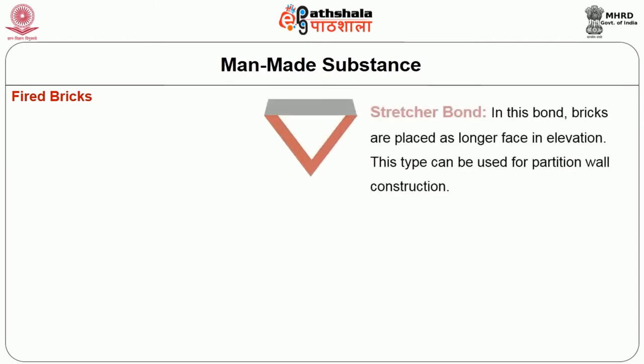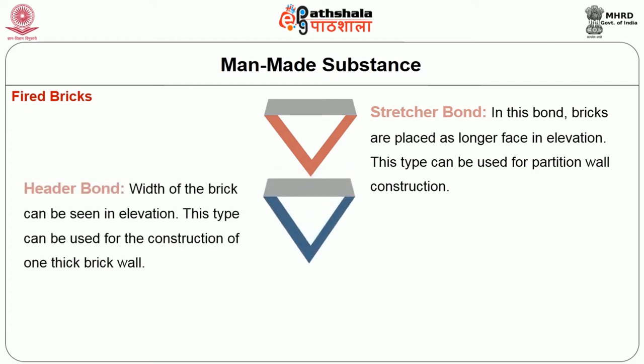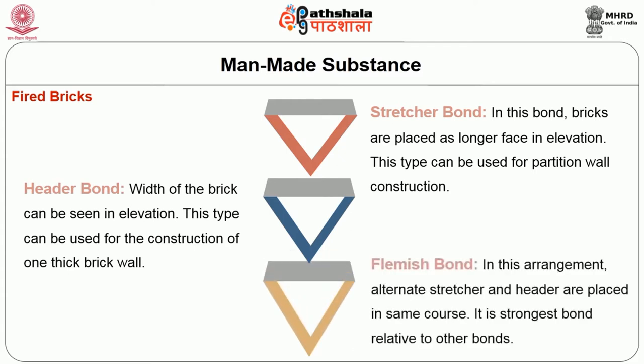Stretcher bond: bricks are laid with their longer face in elevation. This type can be used for partition wall construction. Header bond: the width of the brick can be seen in elevation. This type can be used for the construction of one-brick-thick walls. Flemish bond: alternate stretcher and header are placed in the same course. It is the strongest bond relative to other bonds.